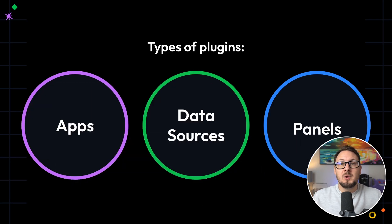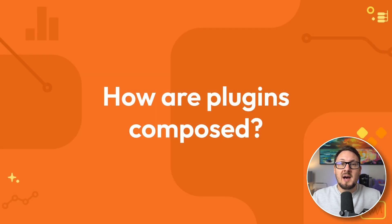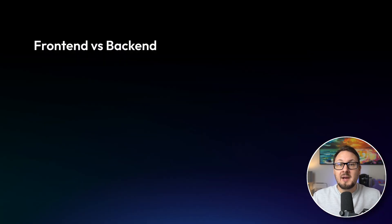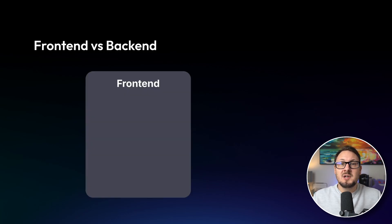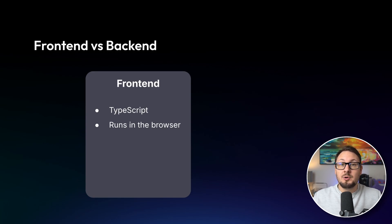Now that you know what kind of plugins are available, let's dive into how plugins are composed. We'll start by discussing the separation of front-end and back-end plugin components. While panel plugins only contain front-end components, app and data source plugins can have a combination of both. Front-end components are written using TypeScript and typically make use of React, meaning they run directly in the user's browser. To access external services via HTTP requests, you must make use of something called the Grafana proxy.